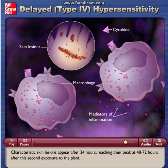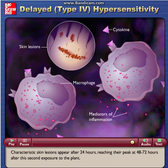Characteristic skin lesions appear after 24 hours, reaching their peak at 48 to 72 hours after the second exposure to the plant.